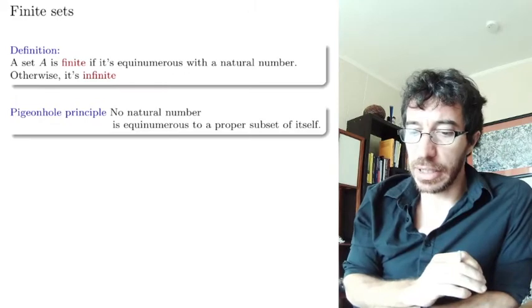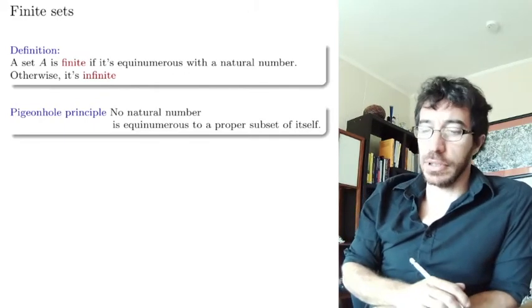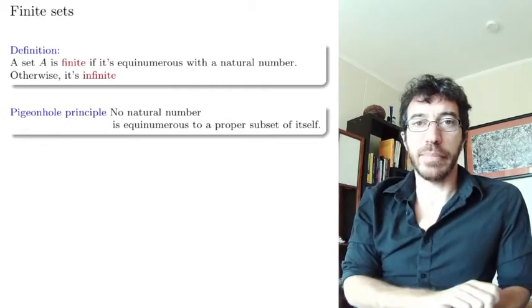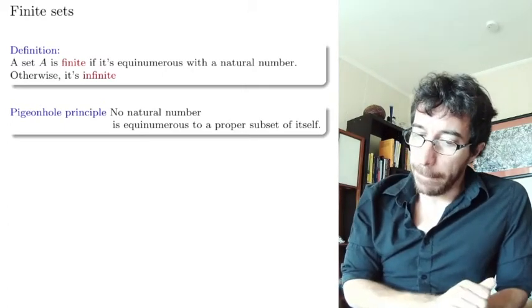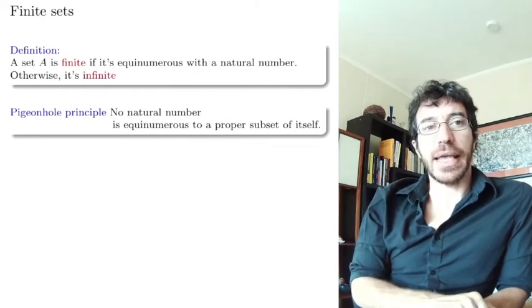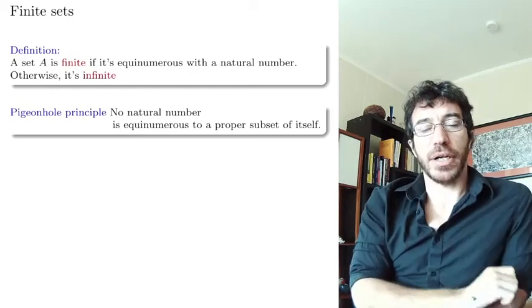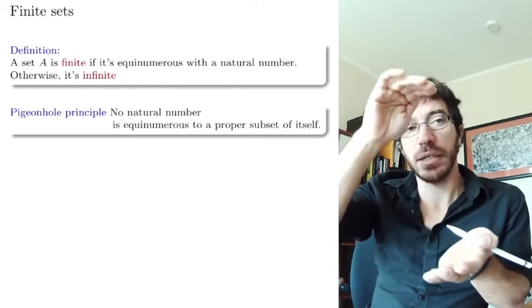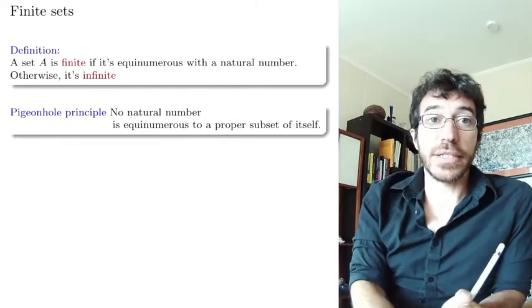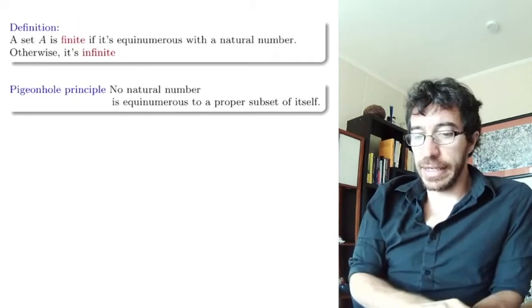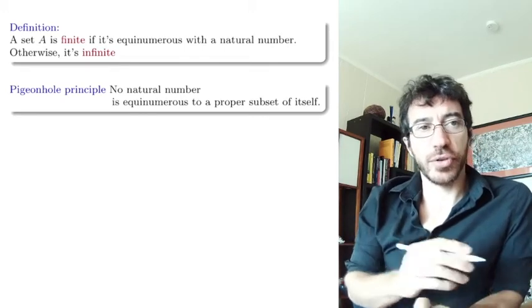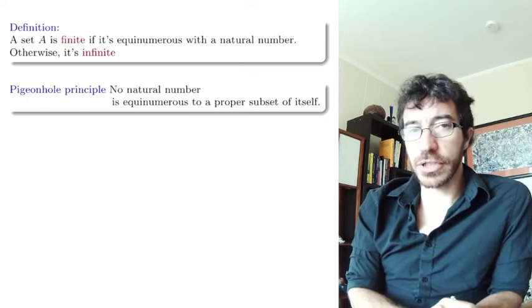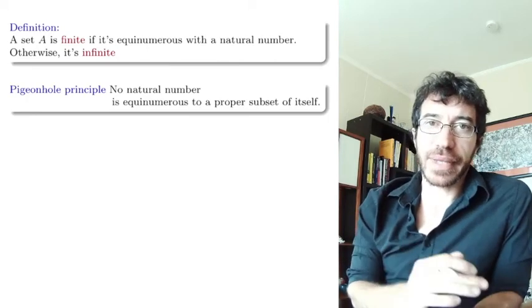One of the most basic principles about natural numbers is the pigeonhole principle, which you probably know: if you have n holes and n+1 pigeons, you cannot put all the pigeons in different holes. Mathematically, it says that no natural number is equinumerous with a proper subset of itself. Since we are defining these natural numbers in an abstract way, even if this is obvious, let's at least sketch a proof.